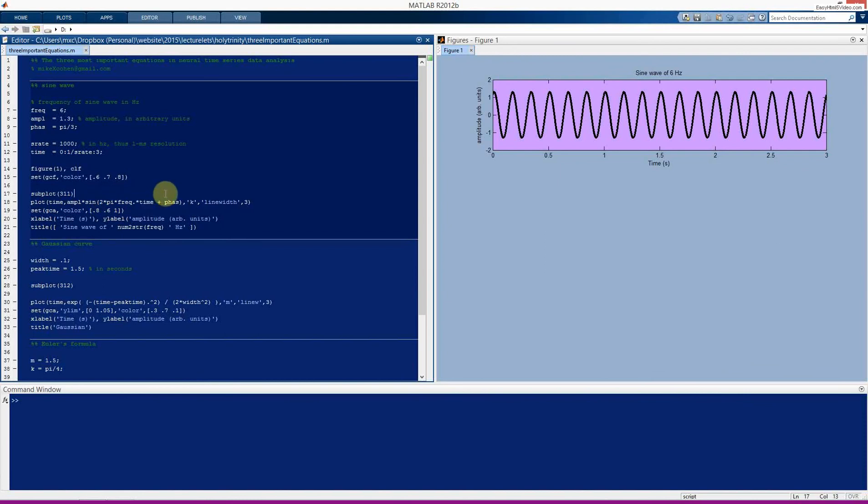if you see something like 2 pi f t, then you should recognize, okay, this is something relating to a sine wave. And that's how you will be able to understand and interpret complex lines of MATLAB code or difficult lines of MATLAB code.